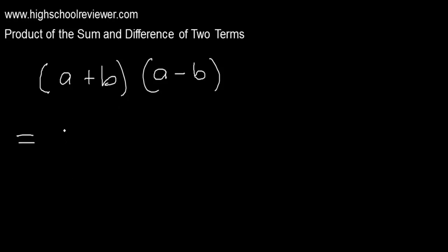This is very easy. The first step is just to square the first term, and we have a squared. And then we subtract — the square of the first term minus the square of the second term. And this is our answer. Remember: the product of the sum and difference of two terms is equal to the square of the first term minus the square of the second term.